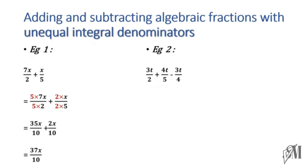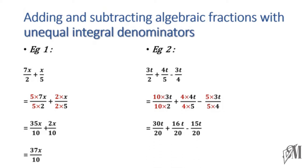The next example has three different denominators: 2, 5, and 4. The LCM of 2, 5, and 4 is 20. To equate all three denominators to 20, multiply the first fraction by 10, the second by 4, and the third by 5. After simplification: 30 plus 16t is 46t, minus 15t gives 31t over 20.